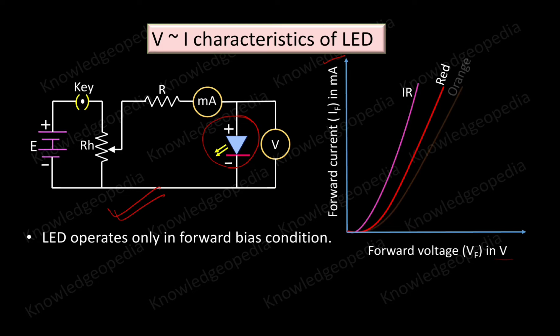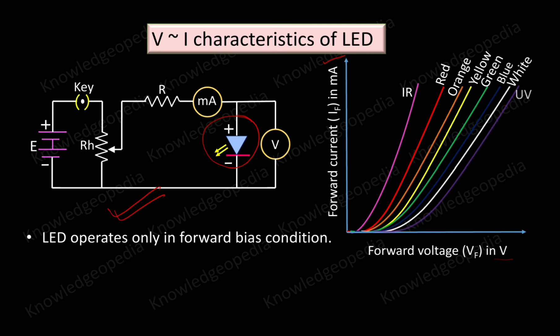Next comes the red one, next is orange, yellow, green, blue, white, and finally this is for ultraviolet LED. From here you can see that the trend is same for all the colored LEDs, only the difference lies here at what value of the applied voltage the current starts increasing, and that value depends on the barrier potential of the corresponding LED. Further, the forward voltage across an LED varies between 1.2 volt to 3.2 volt.